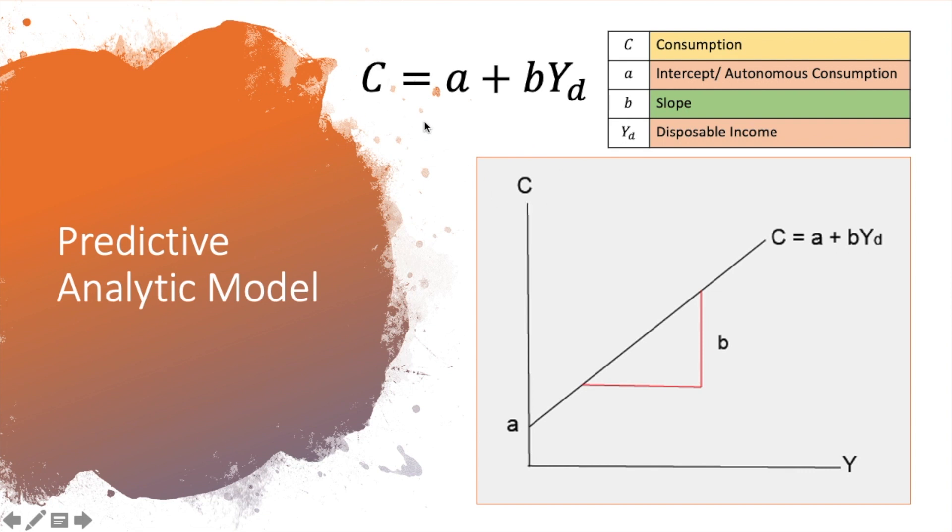And in this case, if we look into this model, we can say consumption here is a dependent variable. Why? Because it depends on disposable income. And disposable income here is an independent variable.